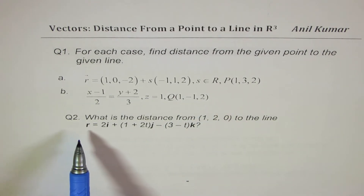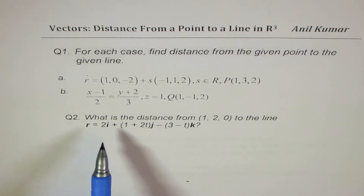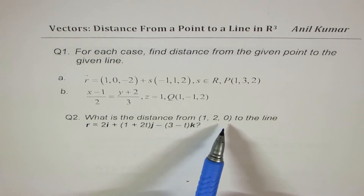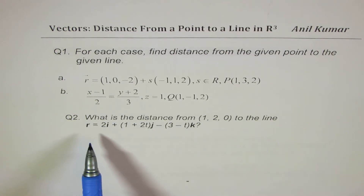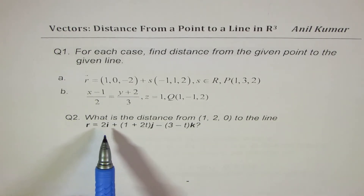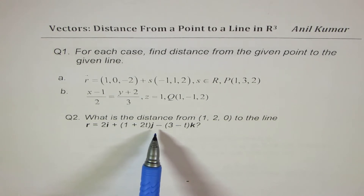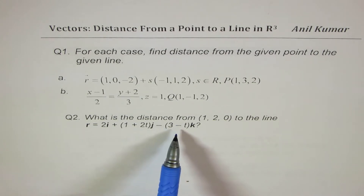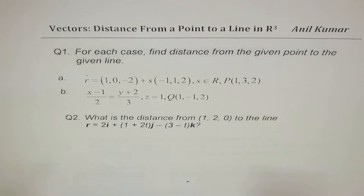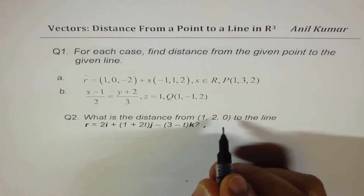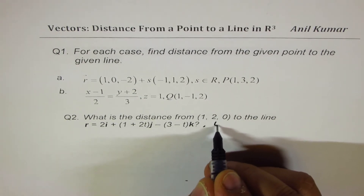Question number two: what is the distance from the point (1, 2, 0) to the line R equals 2i plus (1 plus 2t)j plus (minus 3 minus t)k, where t belongs to the set of real numbers.